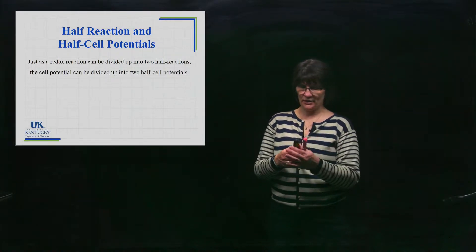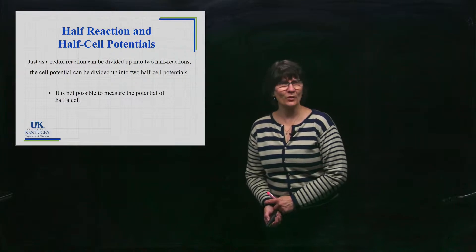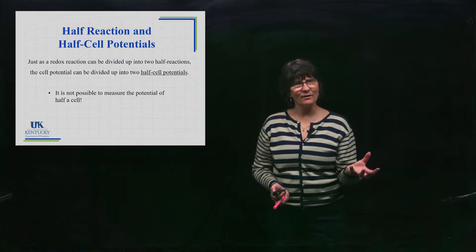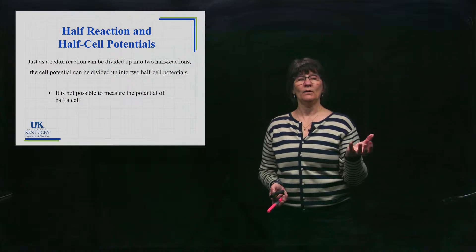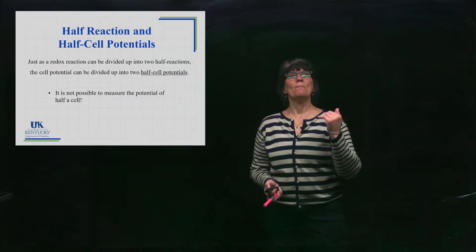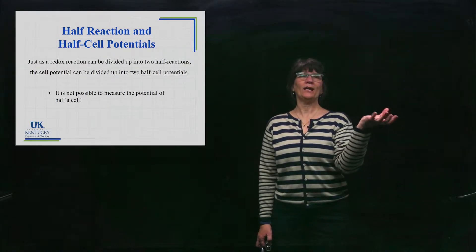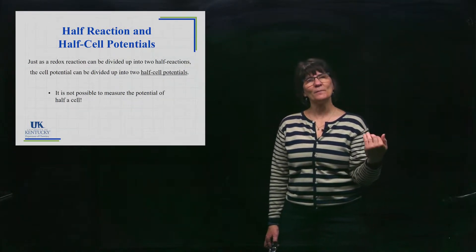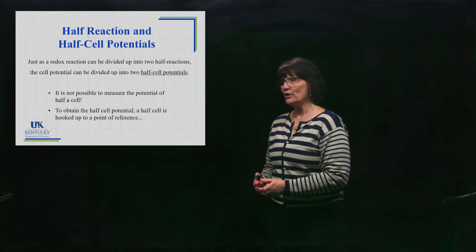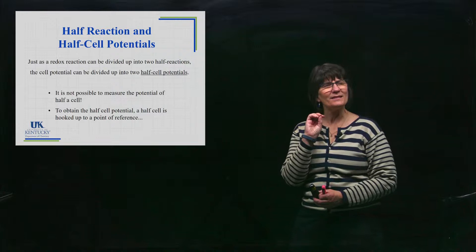We can talk about a cell potential at the anode and a cell potential at the cathode. You can't measure a half-cell potential on its own — we want to assign values to a half cell, but you can't just stick a half cell out there and say 'what's your potential?' It has to be hooked up to a point of reference. To obtain it, we hook it up to a very specific half cell.